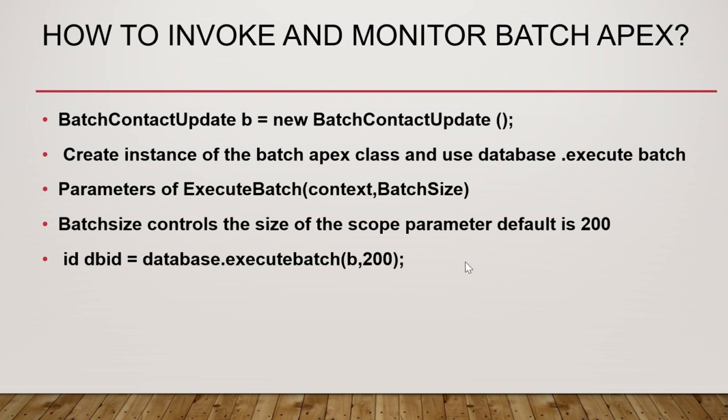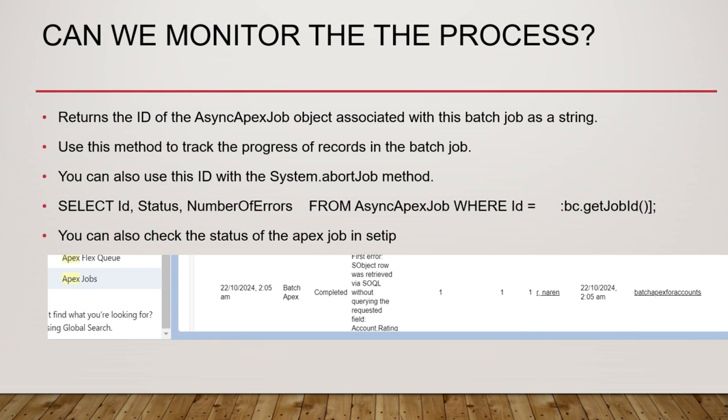Database.executeBatch returns an ID which you can monitor in Apex Jobs in Setup. Your batch job will start running in the background. The returned ID is stored in the AsyncApexJob object, which is a system sObject that stores all asynchronous jobs. You can check the progress of records in the batch job, and any errors will be listed there.